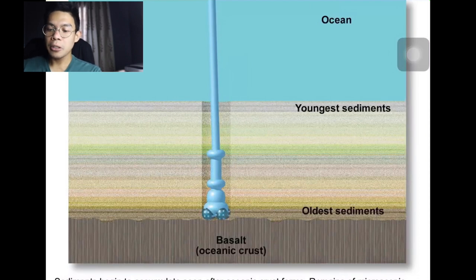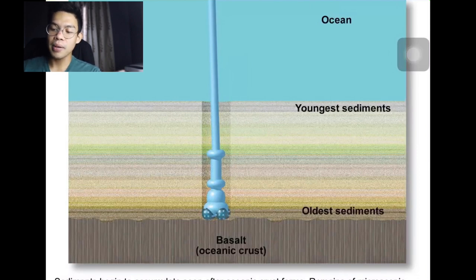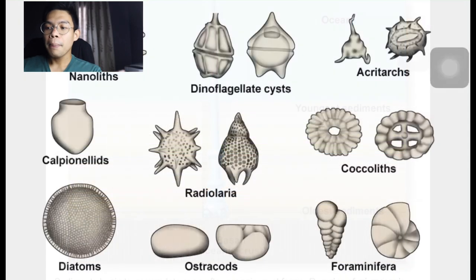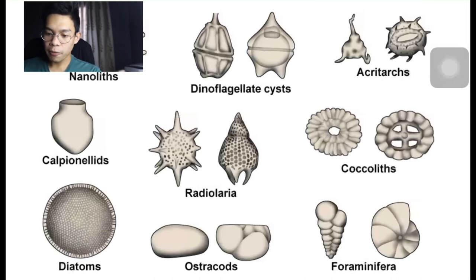Sediments begin to accumulate soon after the oceanic crust forms. Remains of microscopic organisms found in the oldest sediment in the core samples are used to date the seafloor at that site. Microfossils — tiny animal and plant remains of often known ages — are used to determine ocean floor ages by observing which microfossils are most prevalent in the sediment samples.